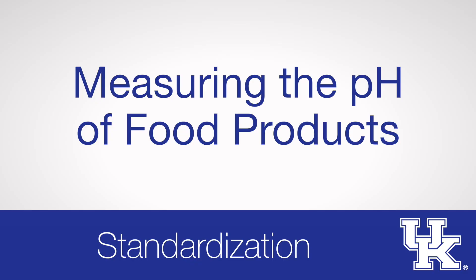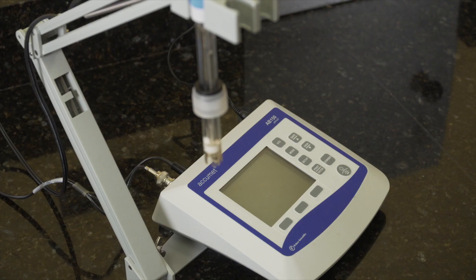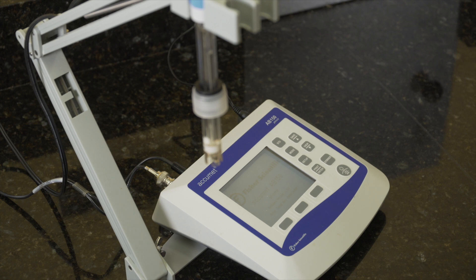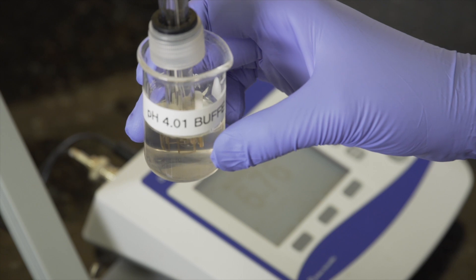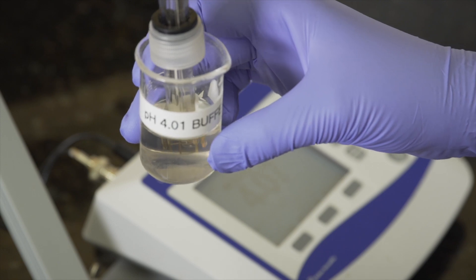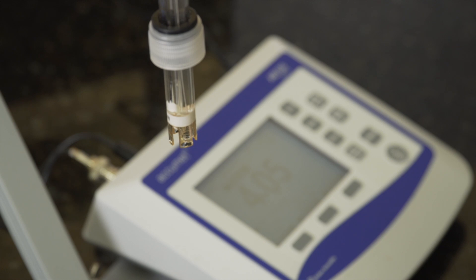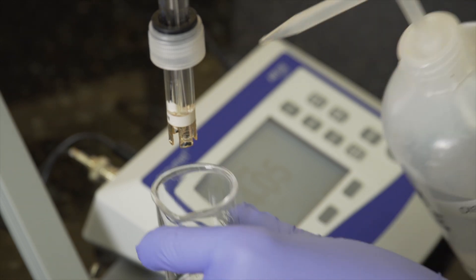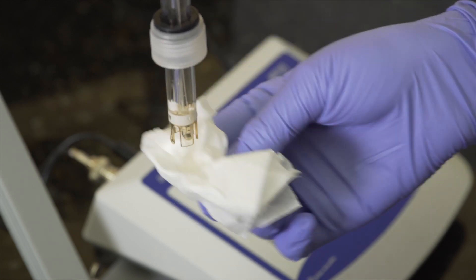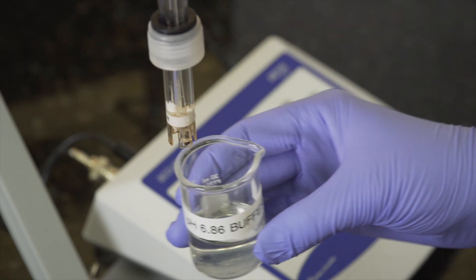Standardization is the procedure for checking the pH meter to make sure it is working properly before the actual food sample is tested. First, turn on the pH meter and let it warm up to allow all of the parts to stabilize. Next, dip the electrode into the standard buffers of known pH. Two standard pH buffers normally used are pH 4 and pH 7. If the food samples you are working with could be in the range of more than 7, then pH 10 buffer could be used. Standardize the pH meter at the start of the day before measuring the pH of samples and hourly after that.